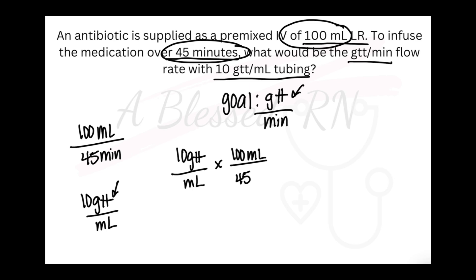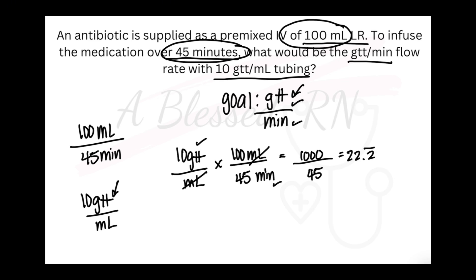I'm going to use my other puzzle piece that has mL in it and put the mLs on the top — they cross out. Now we have drops at the top and minutes at the bottom. We'll multiply across the top and multiply across the bottom, then divide the top by the bottom. 10 times 100 is 1,000, and 45 times 1 is 45. We'll divide 1,000 by 45. With drops per minute, you want to round to the nearest whole number because you can't divide a drop. So 22.2 rounds to 22 drops per minute.